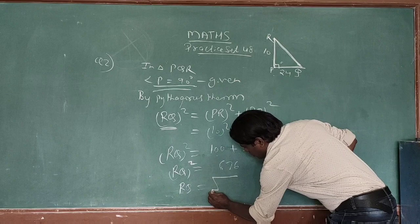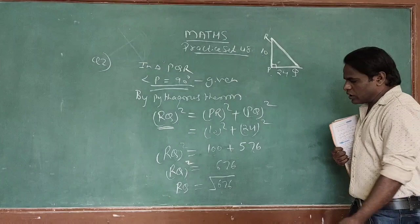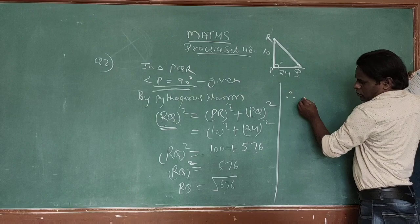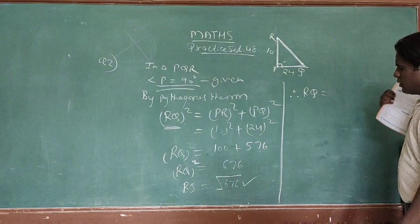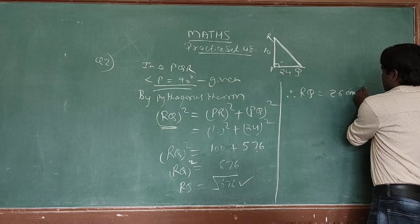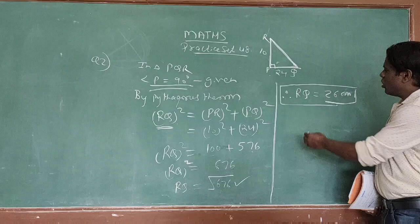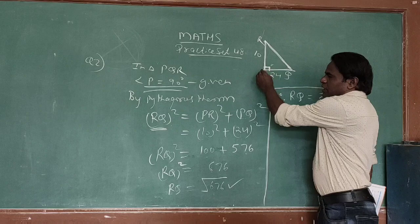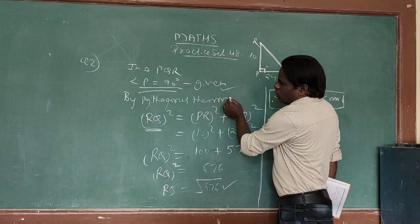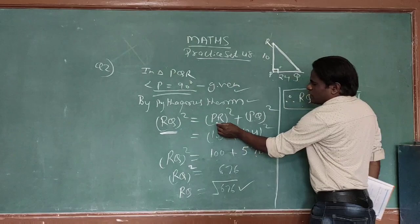RQ equals the square root of 676, which gives us 26 centimeters. So RQ equals 26 centimeters — this is our final answer, found by Pythagoras theorem.